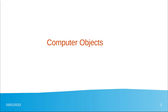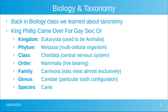Let's start by remembering back in biology class when you learned how every organism was classified in a hierarchical tree labeled with things like kingdom, phylum, and so on. Someone taught you 'King Philip Came Over For Gay Sex' so you could remember the order. From top to bottom: kingdom, phylum, class, order, family, genus, and species.